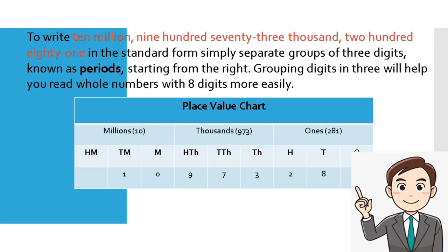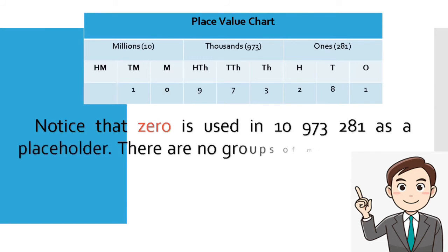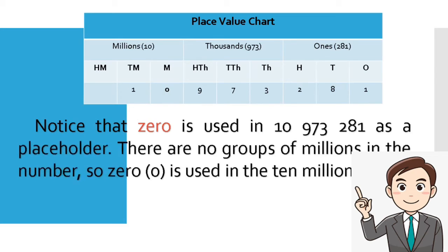In the thousands period, we have hundreds of thousands and tens of thousands. In millions, we have hundreds of millions, tens of millions, and millions. Notice that zero is used in 10,973,281 as a placeholder. There are no groups of ten thousands in the number, so zero is used as a placeholder.